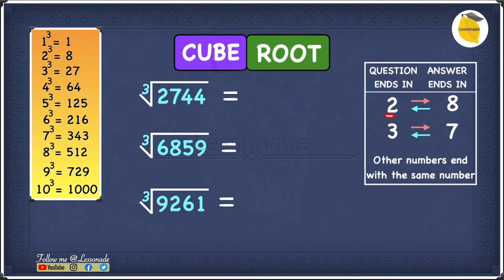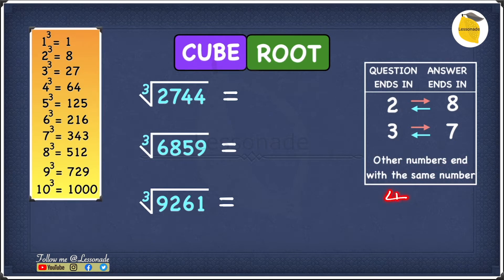Now you may ask, what about numbers other than 2, 8, 3, and 7? The other numbers basically end with the same number. So if the question ends in 4, our answer will also end in 4. Or if the question ends in 6, our answer will also end in 6.